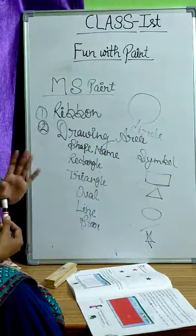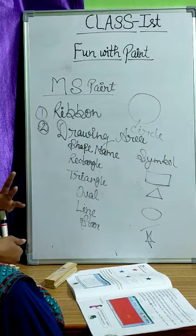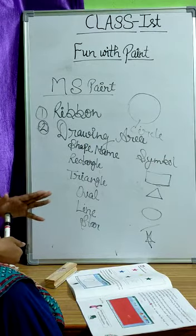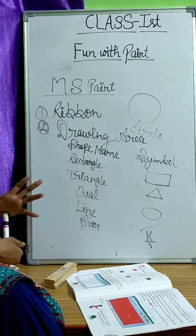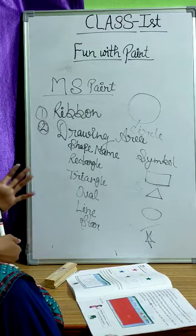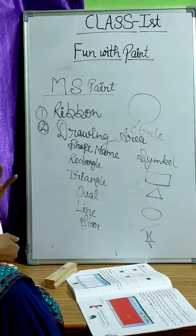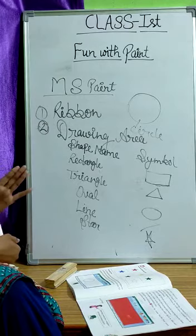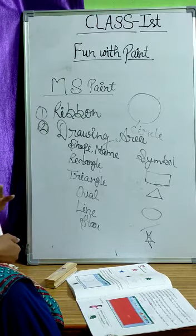How to color the picture? To fill colors into shapes and drawings, we require fill with color tool which is shown in ribbon. To fill color, we would follow these steps. First, click on fill with color icon in the tool group from the ribbon.